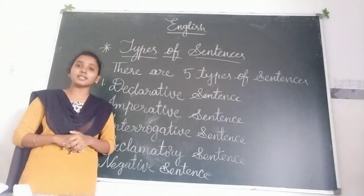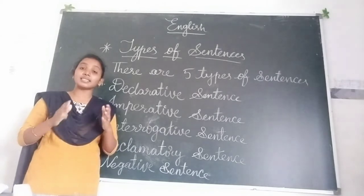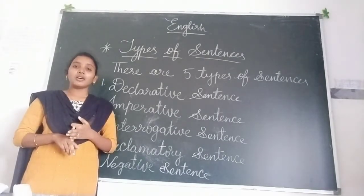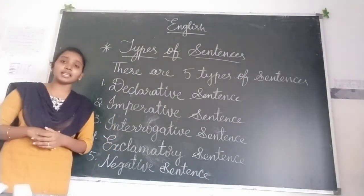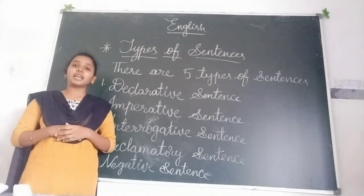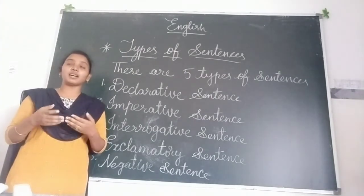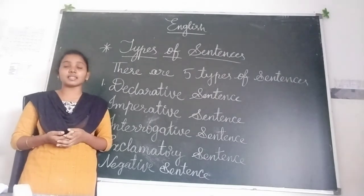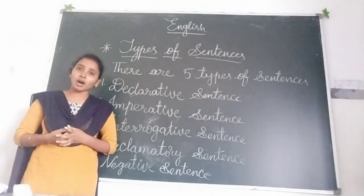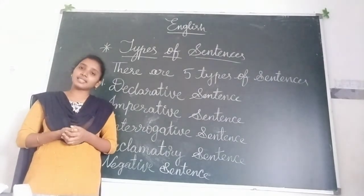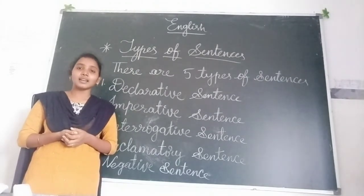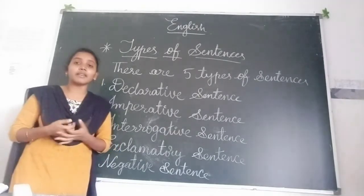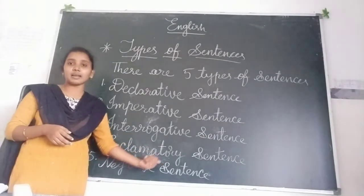Interrogative sentences: 'What is your name?', 'Where are you coming from?' — all these are interrogative sentences. Exclamatory sentences: as we already know, an exclamation mark is used when we express our emotions and feelings. For example, 'Wow, what a beautiful flower!' — that is an exclamatory sentence. 'How sad!' — that is also expressing emotion. When we express our emotions in a sentence, that sentence is called an exclamatory sentence.